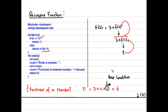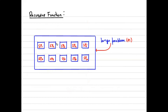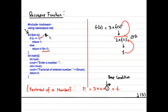So f(3) becomes 3 × f(2). f(2) then becomes 2 × f(1). When it reaches f(1), since 1 is less than or equal to 1, it goes to the if branch and returns 1. So the calculation becomes 2 × 1 = 2 returned as f(2), and then 3 × 2 × 1 = 6. In a recursive function we don't need to write separate logic for each sub-problem — we write the same logic once and call it again and again until the base condition is reached.